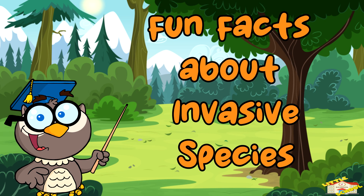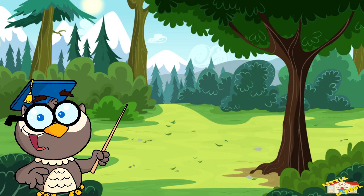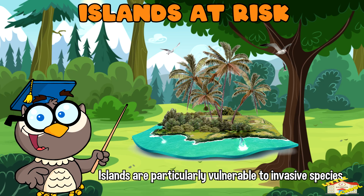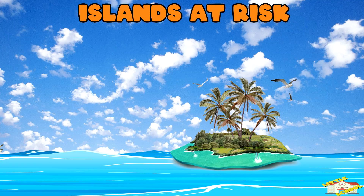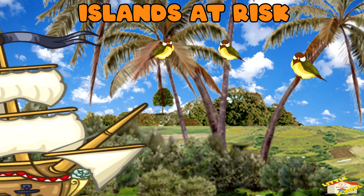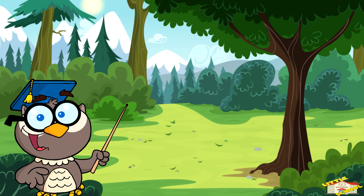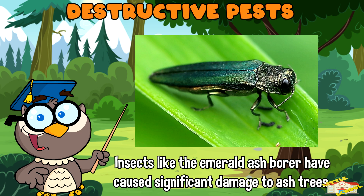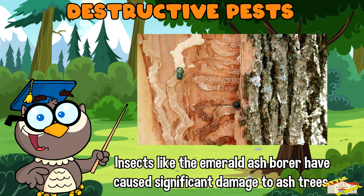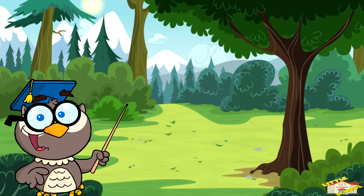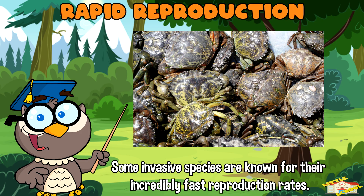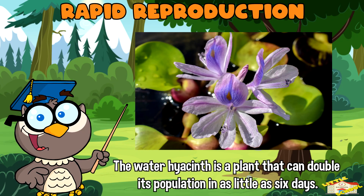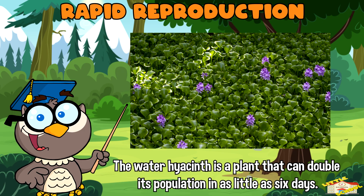Now here are some fun facts about invasive species. Islands are particularly vulnerable — for example, the introduction of rats to many islands has led to the decline or extinction of native bird species that were not adapted to ground predators. Destructive pests: insects like the emerald ash borer, which originated in Asia, have caused significant damage to ash trees in North America by feeding on the inner bark. Rapid reproduction: some invasive species are known for their incredibly fast reproduction rates — for example, the water hyacinth is a plant that can double its population in as little as six days.